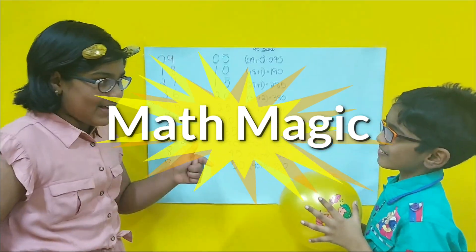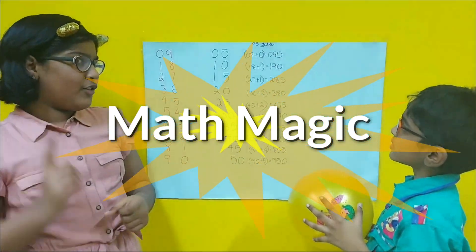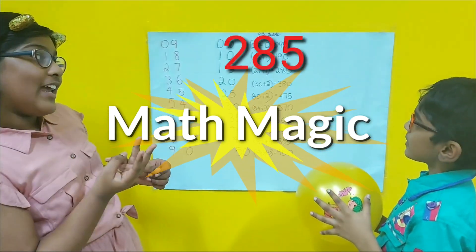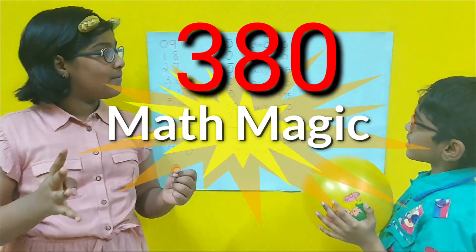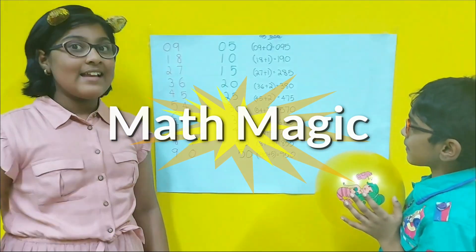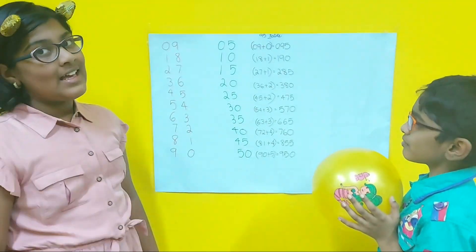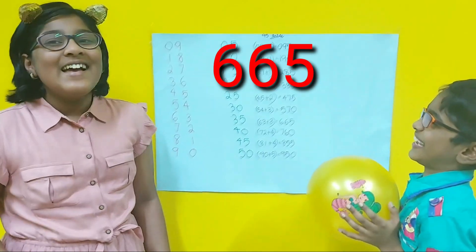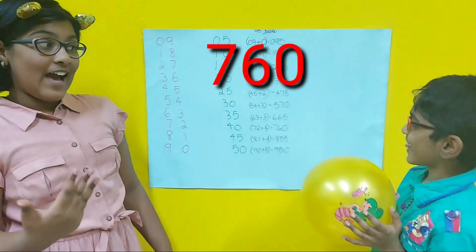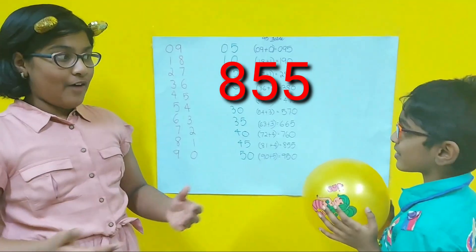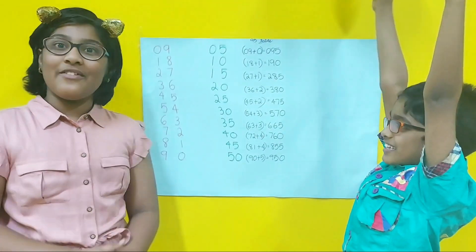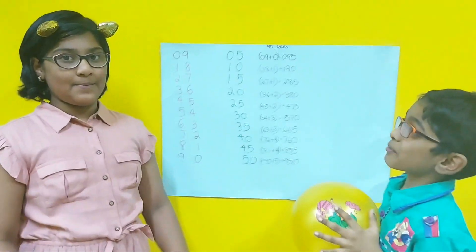Let's say the products faster. 95 into 1? 95. 95 into 2? 190. 95 into 3? 285. 95 into 4? 380. 95 into 5? 475. 95 into 6? 570. 95 into 7? 665. 95 into 8? 760. 95 into 9? 855. And finally 95 into 10? 950. We completed the 95 table. Can I try one?